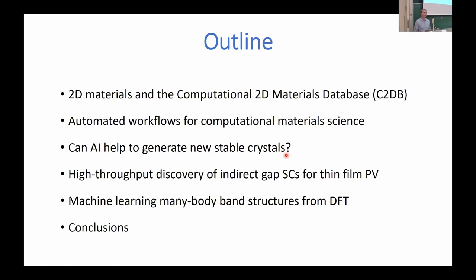I'll also give you an example of a recent study where we looked at indirect semiconductors for thin film photovoltaics. The challenge there is to account for the phonon-assisted processes required to absorb light in an indirect bandgap semiconductor. And finally, if there is time, I'll show you how machine learning can be used to predict many-body GW band structures from DFT input — basically learning from DFT and predicting GW quality band structures.